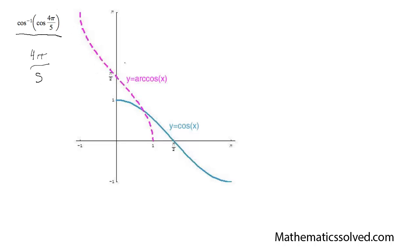We do know that 4π over 5 — it's a little bit hard to estimate where it is because there's not an easy exact value for it. But I do know it's greater than π over 2, which means it's roughly — so 4π over 5 — it's roughly about right here on the graph.